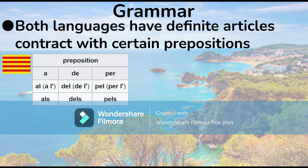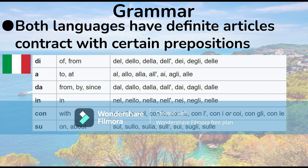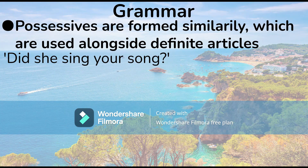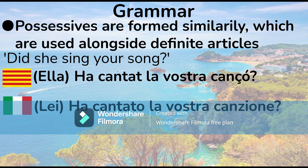Both languages have definite articles that contract with certain prepositions. In Catalan, these are 'a,' 'de,' 'per.' Note that feminine articles don't contract, but in Italian prepositions can contract with all sorts of definite articles. Possessive forms are also formed similarly, used alongside definite articles as well. For example, the question meaning 'did she sing your song?' — in Catalan and in Italian, word for word it's 'she has sung your song.'